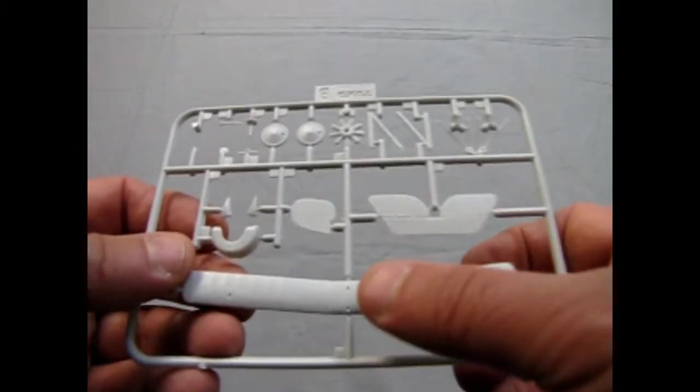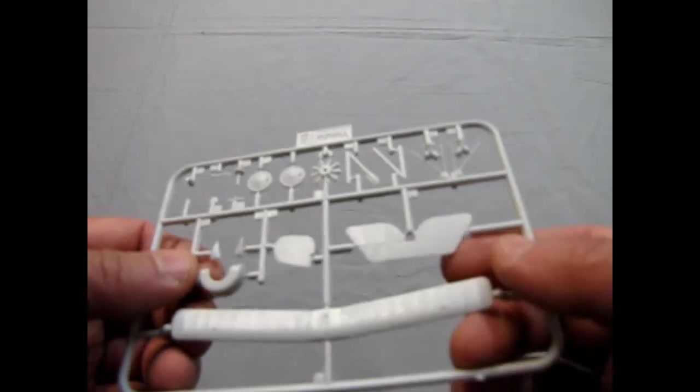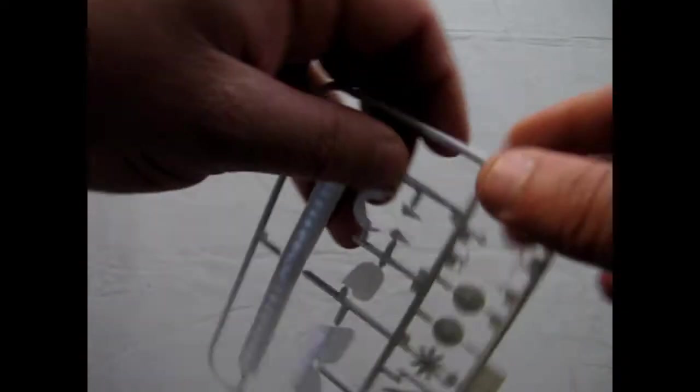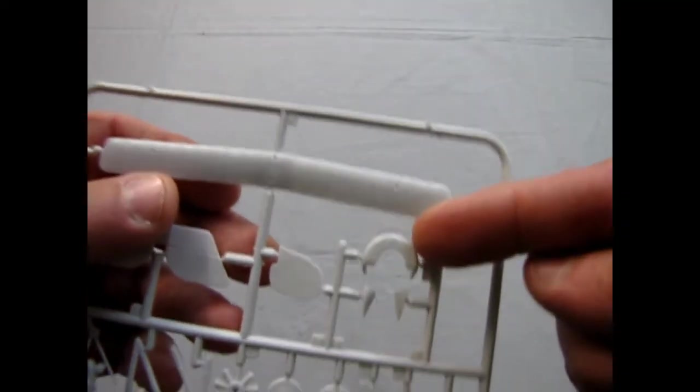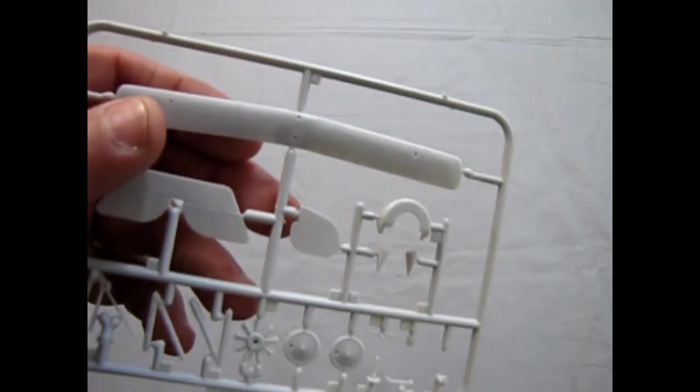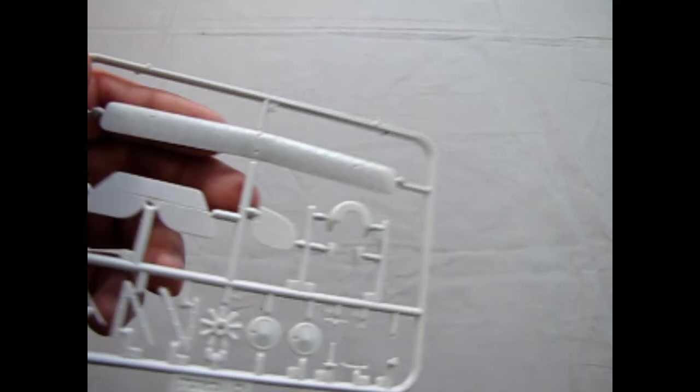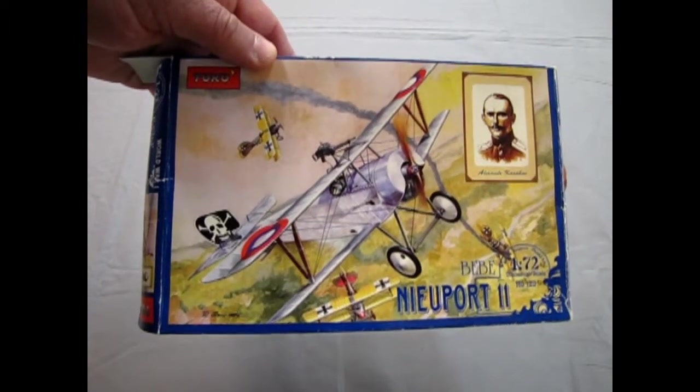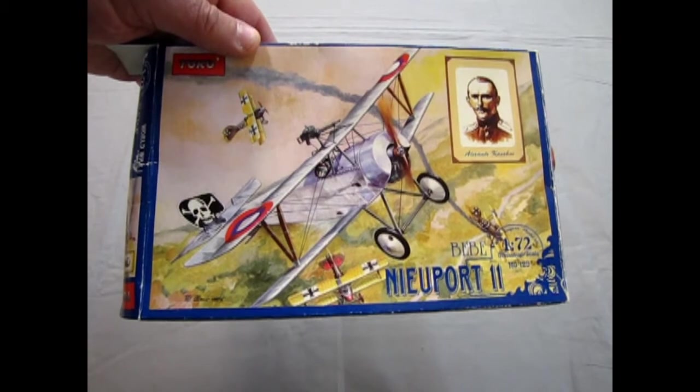And we've got our bottom Cisco wing and our rudders. And there's a cowl for the front of the engine. And on this one, it was only a half cowl. On the Newport 17, the cowl goes all the way around. But of course, that is a later airplane. So that concludes our look at the Toko Newport 11 Baby.